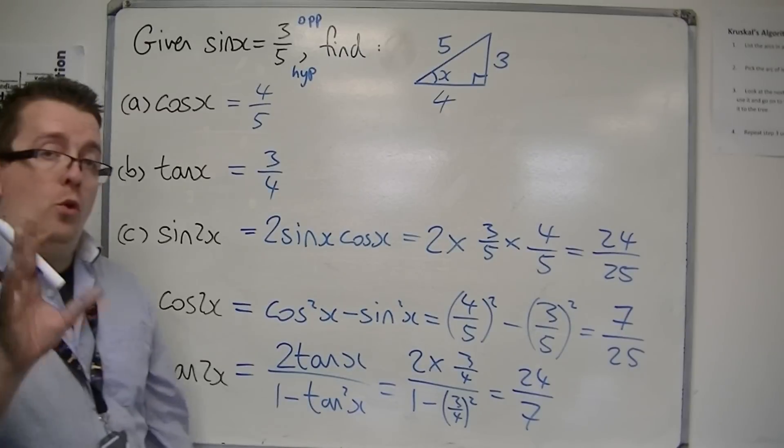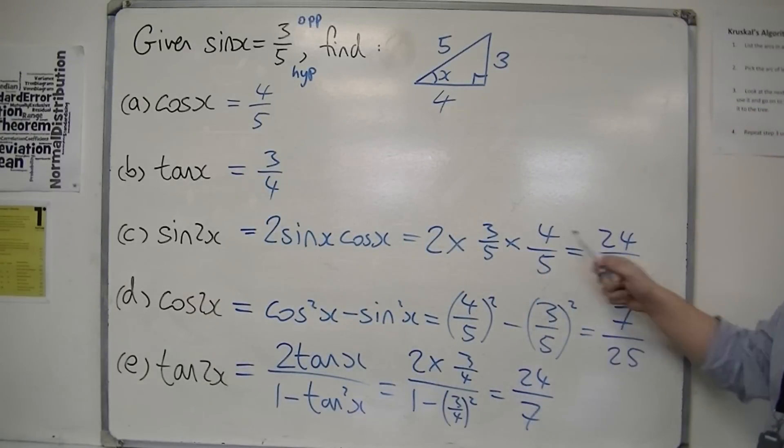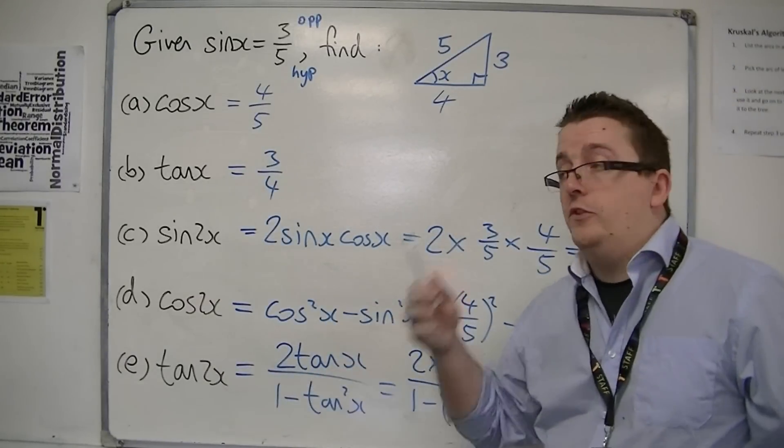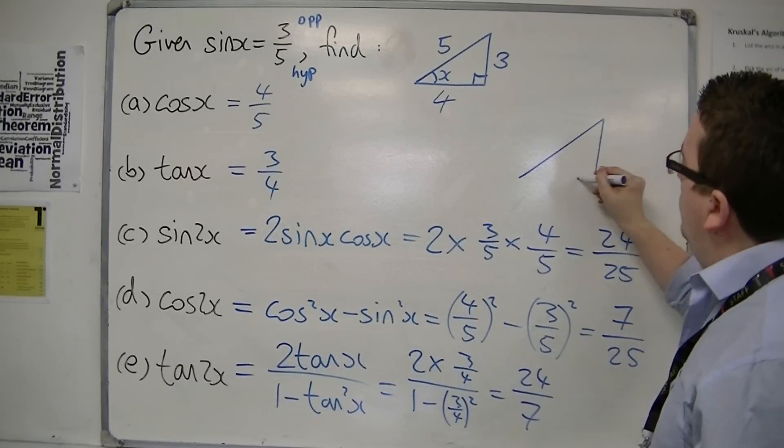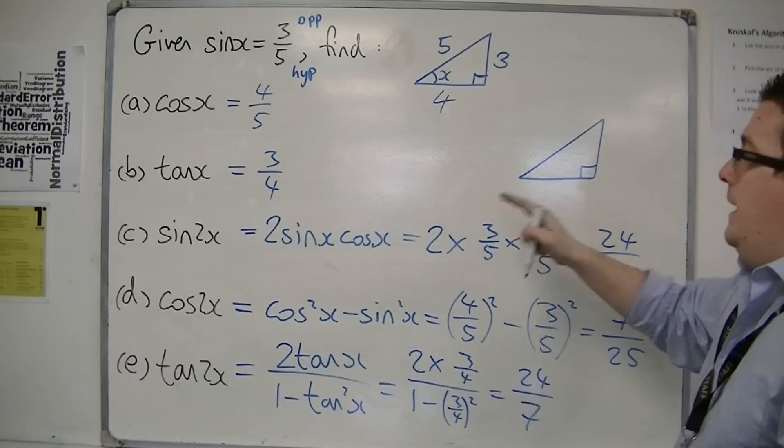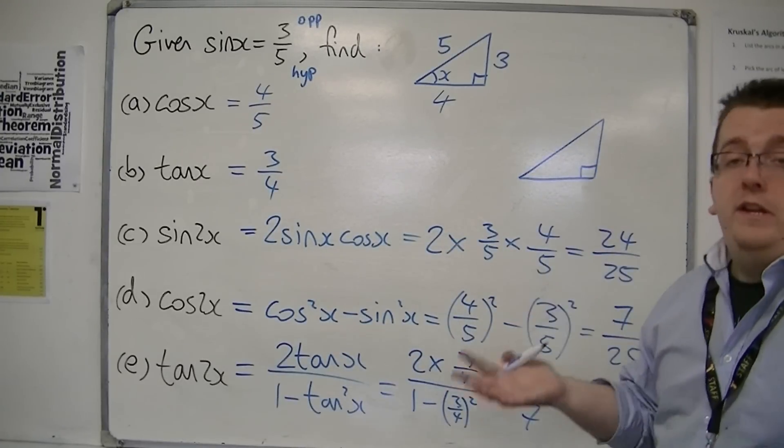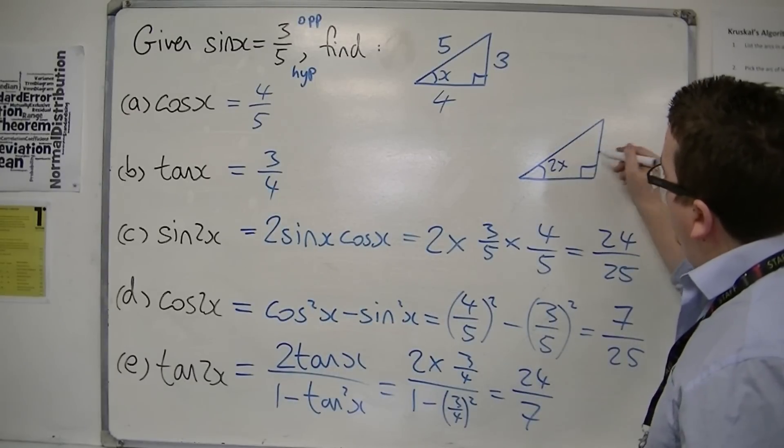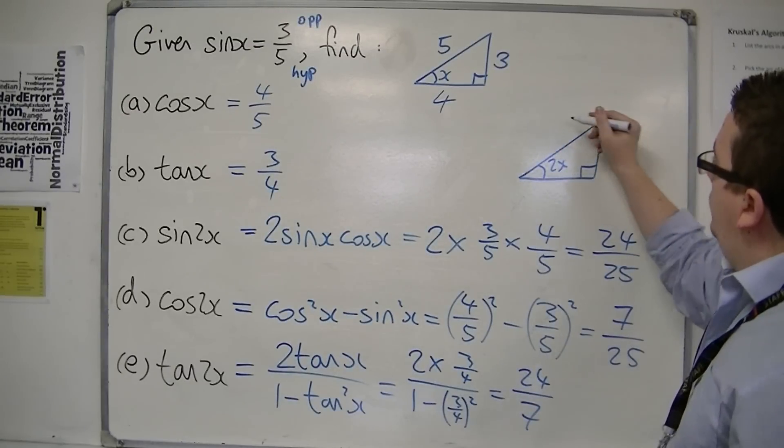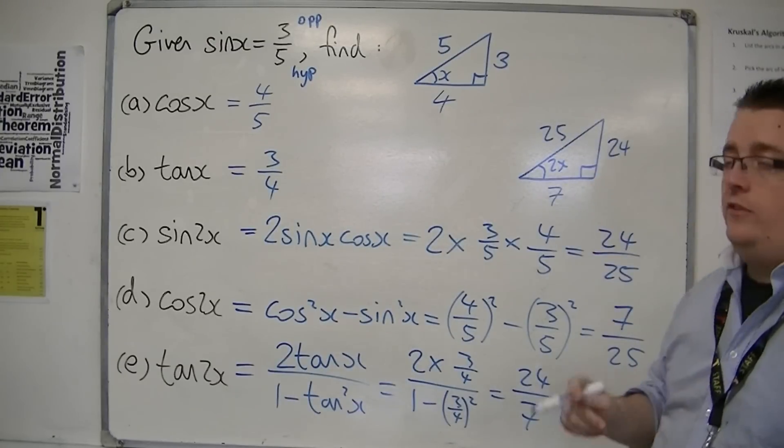Now, you could also have used this approach: instead of finding cos 2x and tan 2x with formulas, you could have used sin 2x. Sin 2x is 24/25, so sin is opposite over hypotenuse. If that's 2x, then this is the opposite, that's the hypotenuse. Then, using Pythagoras, work out that the missing side is 7.